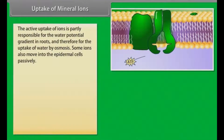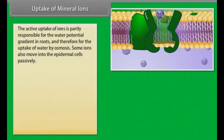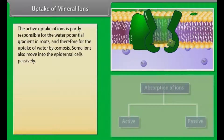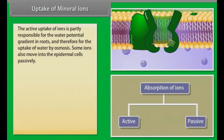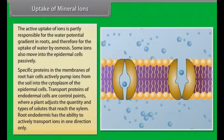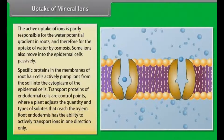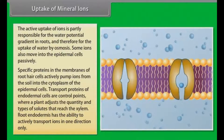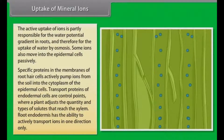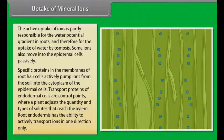The active uptake of ions is partly responsible for the water potential gradient in roots and therefore for the uptake of water by osmosis. Some ions also move into the epidermal cells passively. Ions are absorbed from the soil by both passive and active transport. Specific proteins in the membranes of root hair cells actively pump ions from the soil into the cytoplasm of the epidermal cells. The endodermal cells have many transport proteins embedded in their plasma membrane. They let some solutes cross the membrane, but not others. Transport proteins of endodermal cells are control points where a plant adjusts the quantity and types of solutes that reach the xylem. The root endodermis, because of the layer of suberin, has the ability to actively transport ions in one direction only.